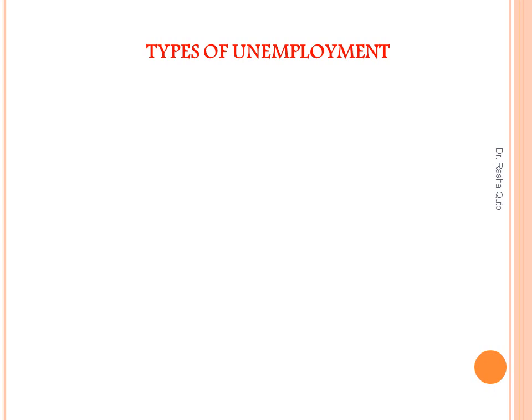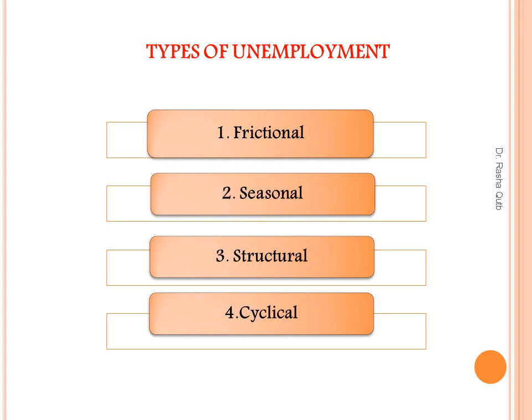Turning to the types of unemployment, we have four types: frictional unemployment, seasonal unemployment, structural unemployment, and cyclical unemployment. The first type is frictional unemployment. It refers to people who are between jobs — someone leaves one job looking for a better salary or a better job. For example, students who have just completed school and are looking for a job. This unemployment is temporary, not deliberate.